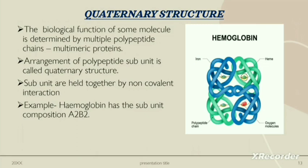And at last, let us discuss about quaternary structure. The biological function of some molecules is determined by multiple polypeptide chains, which are called multimeric proteins. The arrangement of polypeptide subunits is called quaternary structure. The subunits are held together by non-covalent interactions. The example is hemoglobin, which has a subunit composition of α2β2.